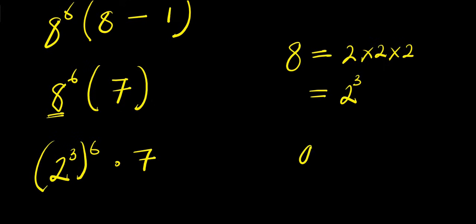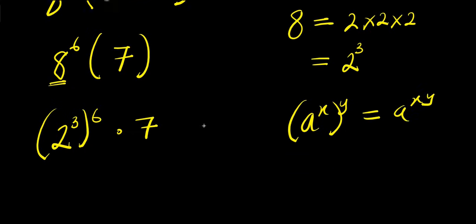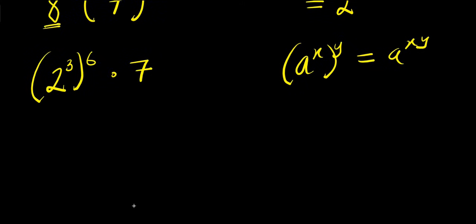And if you have a power x, times a power y, this equals a power x times y. So we have 3 times 6, that is 18. So we have 2 power 18 times 7.